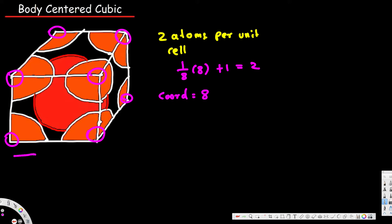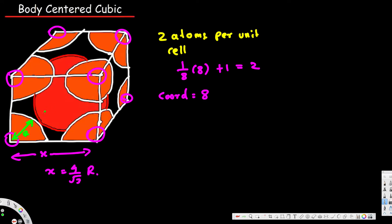If we talk about the edge length x, it is equivalent to four over the square root of three times r. Let's see how we can derive this. We need to know that the small atom at the corner has radius r, and the big atom in the middle has a length from side to side equal to two r.